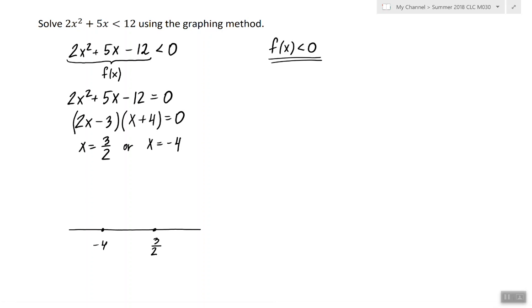And it's easy to see that f is a quadratic function with a positive leading coefficient, meaning its graph will be a parabola opening up. And the fact that it has two x-intercepts means it's going to look something like this.